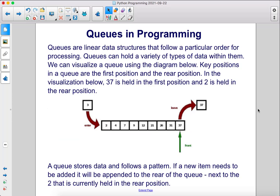Queues are linear data structures that follow a particular order for processing. Queues can hold a variety of types of data within them. We can visualize a queue using the diagram below. Key positions in a queue are the first position and the rear position. In the visualization below, 37 is held in the first position and 2 is held in the rear position.